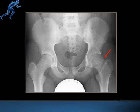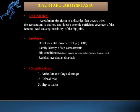The next condition is acetabular dysplasia. It is a disorder that occurs when the acetabulum is shallow and does not provide sufficient coverage for the femoral head, causing instability of the hip joint. The problem here is with the acetabulum, not the femoral head — the acetabulum is shallow and small, so it does not cover the femoral head sufficiently, causing displacement or instability at the hip joint.